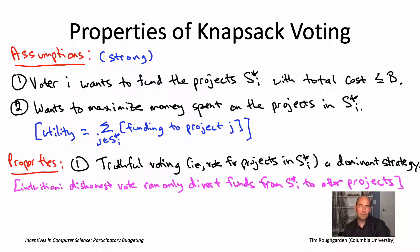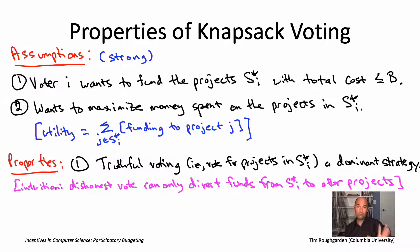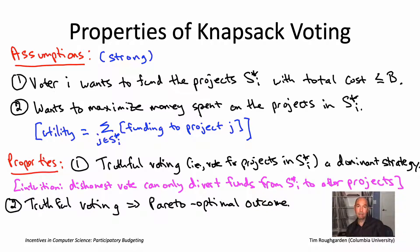That's the first property — a truthfulness guarantee analogous to what we had for the Vickrey auction. Now, recall that with K-approval voting, voters could plausibly vote in a way that leads to a non-Pareto-optimal outcome — where everybody voted for the expensive project generating value four per voter, when it would have been better to fund two cheaper projects generating value five per voter. The second property says that won't happen with knapsack voting. Under assumptions one and two, and assuming voters bid truthfully voting for their set S* I — and property one says they are encouraged to do so since that's a dominant strategy — if everybody does that dominant strategy, you wind up with a Pareto optimal outcome. In that sense, knapsack voting is strictly better than the more naive K-approval mechanism.